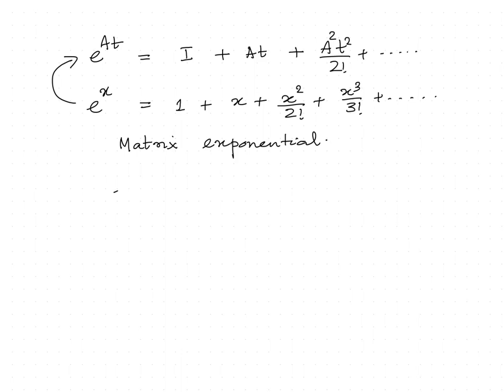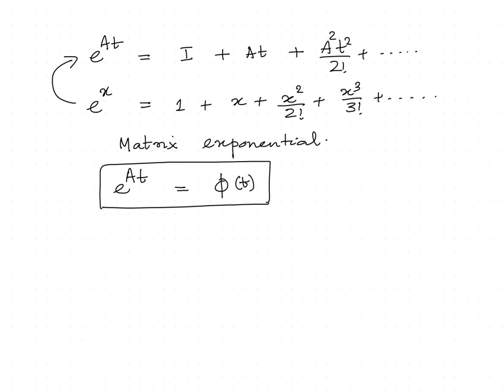We can write e^(At) as phi(t), which is the notation for e^(At). From this, the properties of the state transition matrix can be deduced. The first property says phi(0) = e^(A·0), that is nothing but I, the identity matrix.